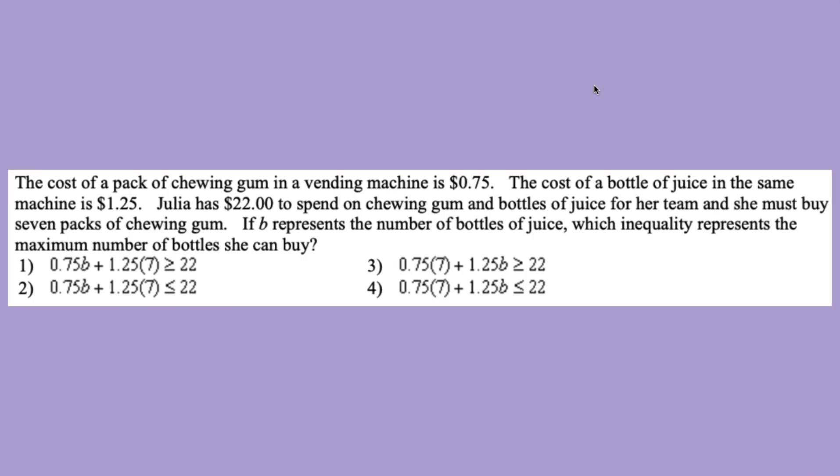For the second question, we can just dissect this down by looking at the problem. Starting off, we know that $22 is the maximum that she has. So already, we can get rid of 1 and 3. Because here, they're making the number of the price of the products that she's buying greater than the number of money that she has. But we know that that's not true. Because if she doesn't have enough money to buy the products, then obviously the money that the products are going to sell for, or the number of products that she's going to buy is going to be less than the number of money that she has.